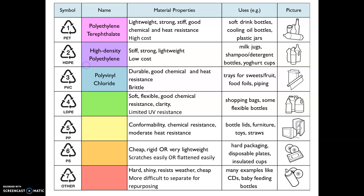PVC stands for polyvinyl chloride — it has a chlorine chemical in with the carbon and hydrogen bonds, and is also known as vinyl, used for vinyl records, vinyl stickers, or vinyl decals. LDPE is the little brother of HDPE — low density polyethylene — your classic shopping carrier bags, and if made a little thicker, flexible bottles. PP stands for polypropylene — very chemically resistant, used for flexible bottles and toys, as it has an interesting property of being quite a soft sort of plastic.